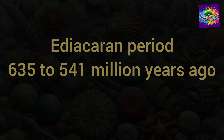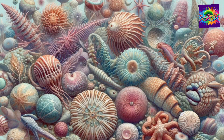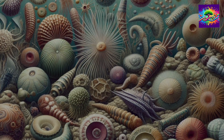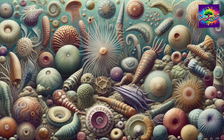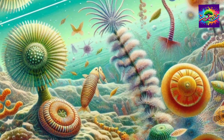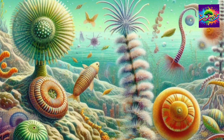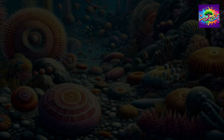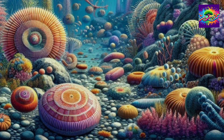The fossils of the Ediacaran Period are known for their various unique life forms that existed before the Cambrian explosion, representing some of the earliest known complex multicellular organisms. These fossils are primarily found in the Ediacara hills of South Australia, the White Sea region of Russia, and Newfoundland in Canada.